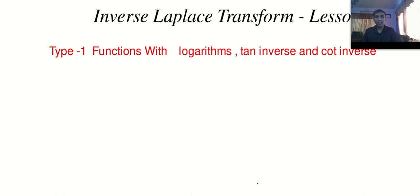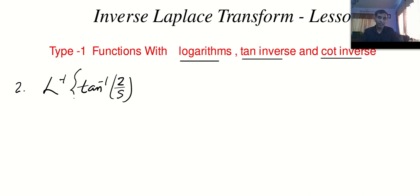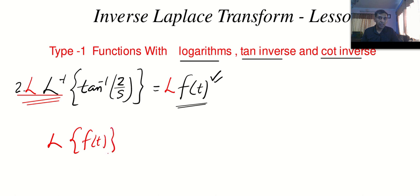Now let us do one more question. Find the Laplace inverse of tan inverse of 2 divided by s. I told you — logarithm, tan inverse, cot inverse — the trick is very simple: when we differentiate, we will get a function whose Laplace inverse exists. Tell me what is the method. First thing — give it a name f of t. Then take Laplace on both sides, writing from right to left: Laplace of f of t equals tan inverse of 2 by s.